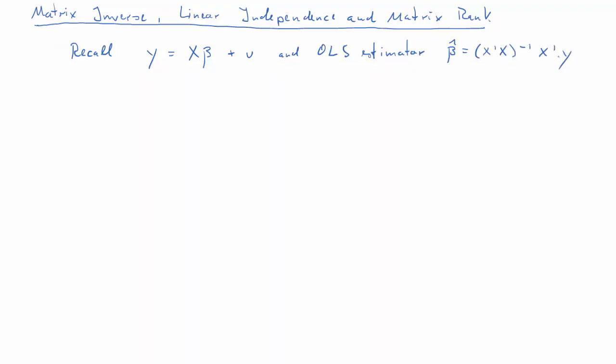Beta hat equals x prime x inverse x prime y. So we can immediately see there is an inversion required. That's what we call a matrix inversion to the power of negative 1. So let's get the naming sorted. We call something to the power of negative 1, if it is a matrix, the inverse.